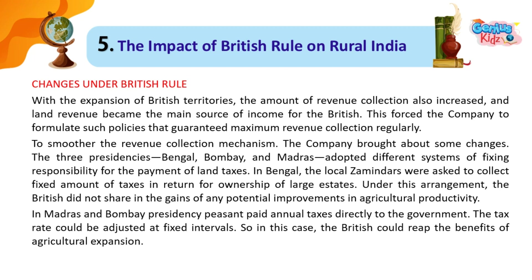In Bengal, the local zamindars were asked to collect a fixed amount of taxes in return for ownership of large estates. Under this arrangement, the British did not share in the gains of any potential improvements in agricultural productivity. In Madras and Bombay Presidency, peasants paid annual taxes directly to the government, and the tax rate could be adjusted at fixed intervals.